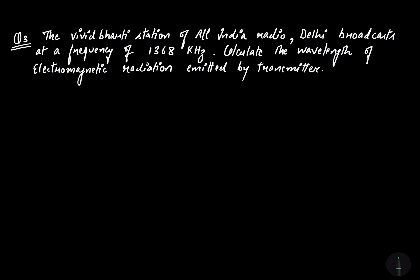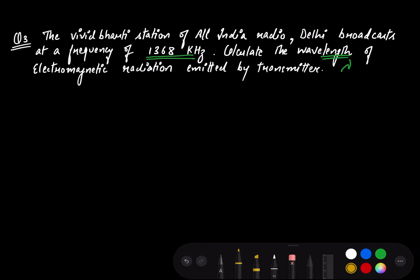Now we're talking about the radio station of India called All India Radio, headquartered at Delhi. The question is: the Vividh Bharati station of All India Radio, Delhi broadcasts at a frequency of 1368 kilohertz. Calculate the wavelength of the electromagnetic radiation emitted by the transmitter.